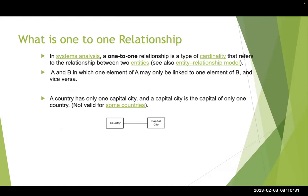What is a one-to-one relationship in Salesforce? It is a relationship between two entities. Here I am taking element A and element B — element A must only link with element B and vice versa. For example, a country has only one capital city, and that capital belongs to only one country.